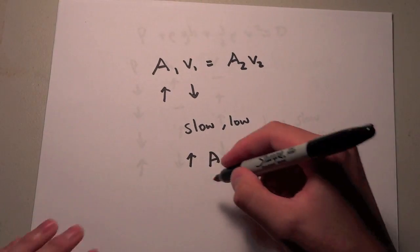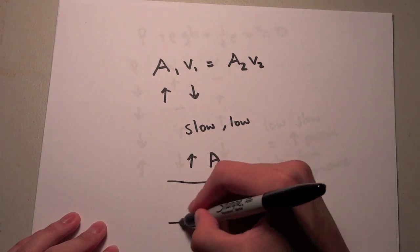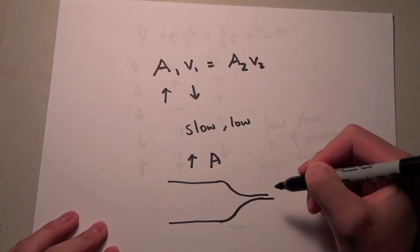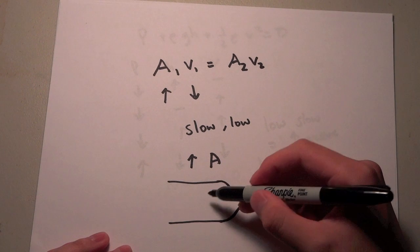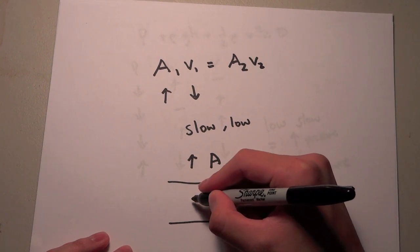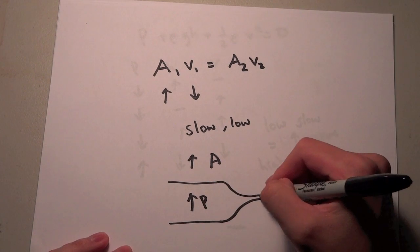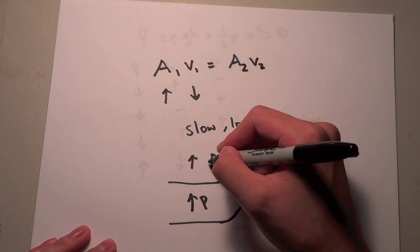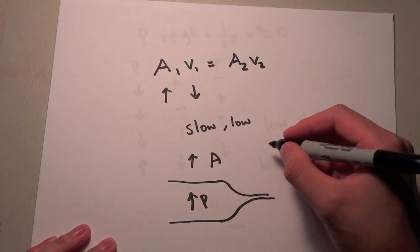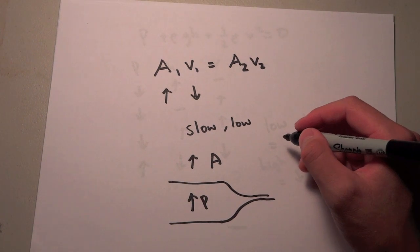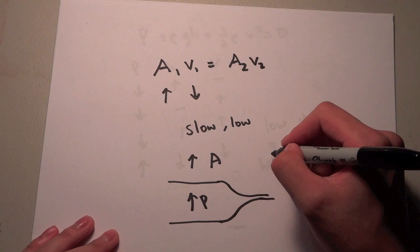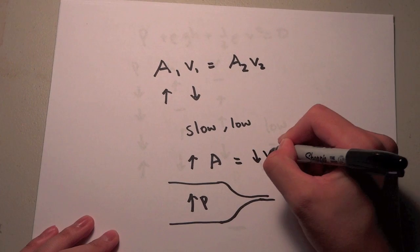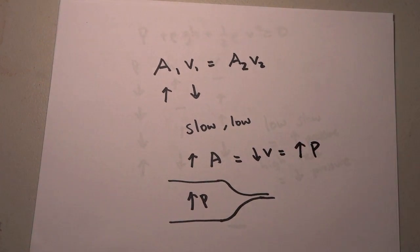So we would want something, if we compared, let's say, this to this, this would definitely have a very high pressure compared to over here. Because it has a bigger cross-sectional area means the velocity is slower. Velocity is slower means that it's going to have an increase in pressure. So let's just write that down. Increase in area equals a decrease in velocity, which will correlate to an increase in pressure.